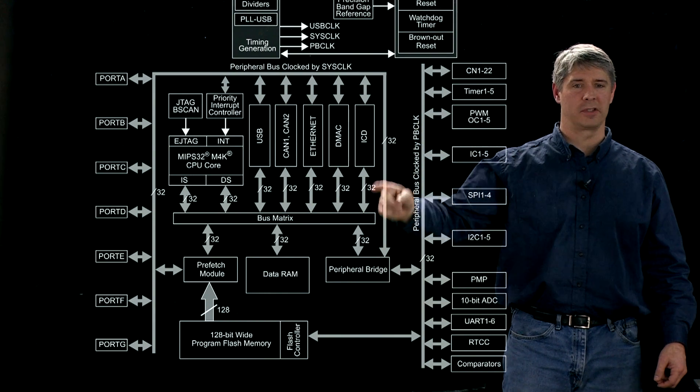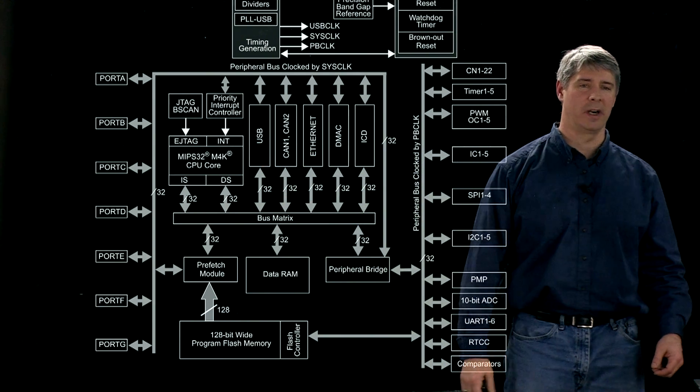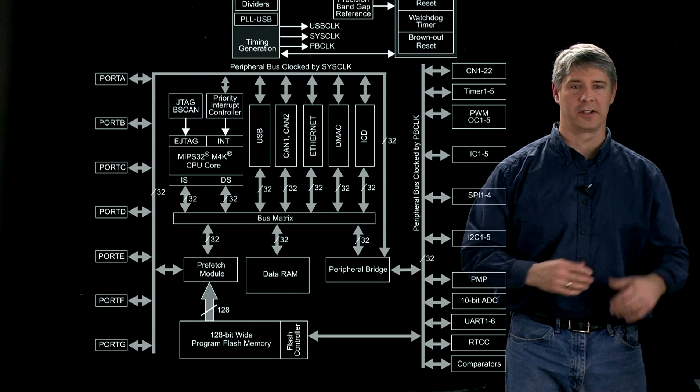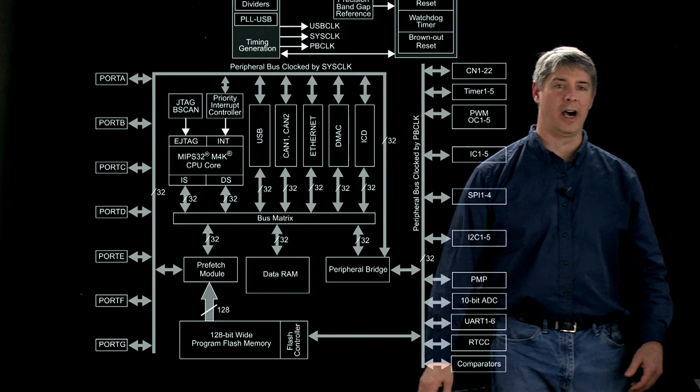And those values come down to the peripheral bridge here and get put up on the bus matrix so then they're accessed by the CPU. And the same thing if values are written out to digital outputs, they come down here through the bus matrix, through the peripheral bridge, and out to the digital outputs.